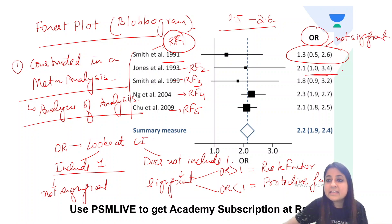If you look at this one, it includes one, the second one, 2.1, confidence interval 1.0 to 3.4. This is also not significant. Similarly, the third one, this is also not significant.